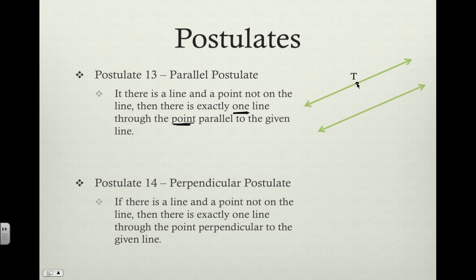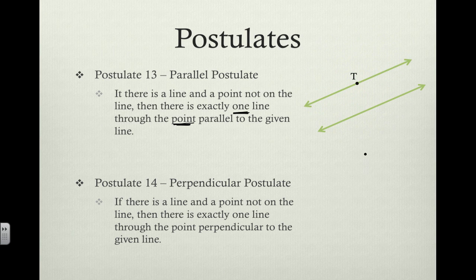and it's this line right here that goes through point T, that will not intersect this line — that is parallel. And if we were to rotate this line around, we can see any other line that we rotate is going to intersect this line down here. So there is only one line that can go through a given point that will be parallel to another line.